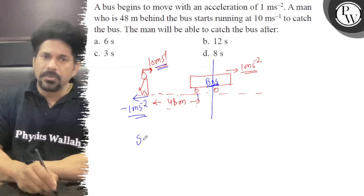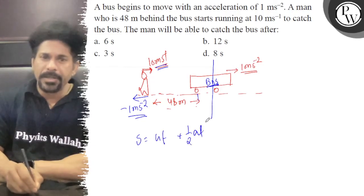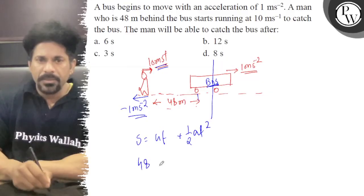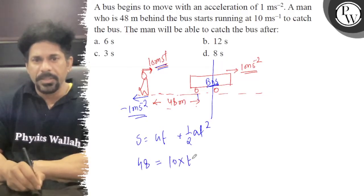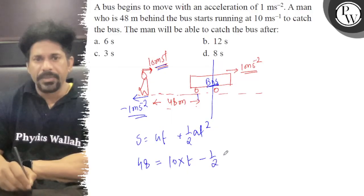So s equals ut plus half at squared. This equals 10 meters per second times t minus 1/2 times t squared.